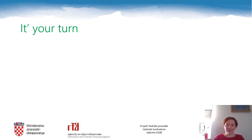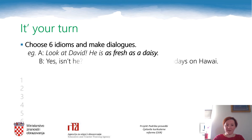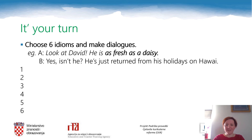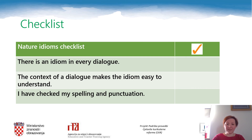It's your turn now to be creative. I would like you to choose six idioms and make dialogues. Here is an example: 'Look at David. He's as fresh as a daisy.' 'Yes, isn't he? He's just returned from his holidays in Hawaii.' So you will have to stop the video now, take your notebooks and write down your six dialogues.